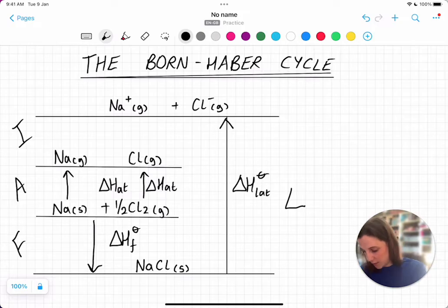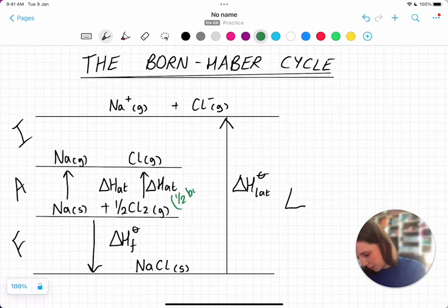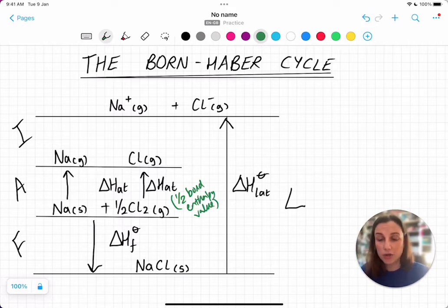If we look back at my example, we're going from half Cl2 to just Cl. So this would be half the bond enthalpy value. So often you can pull out that value of the non-metal from the bond enthalpy. Just be aware that that exists and the IB will expect that you can know how to do that.